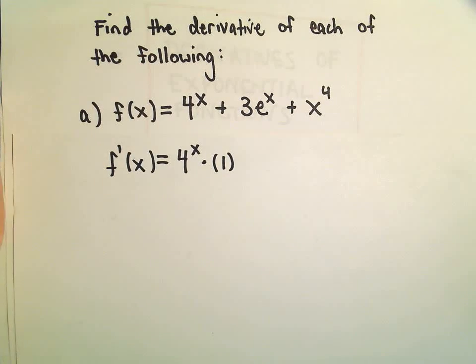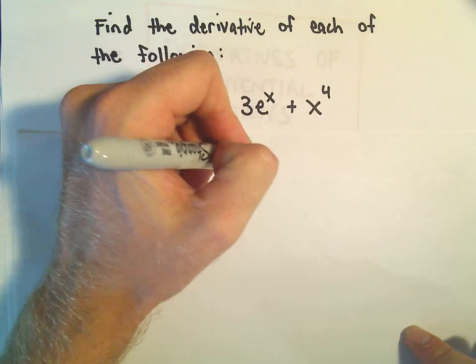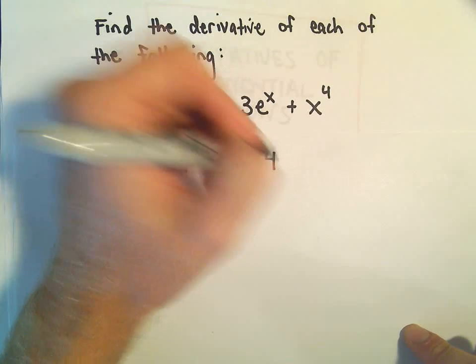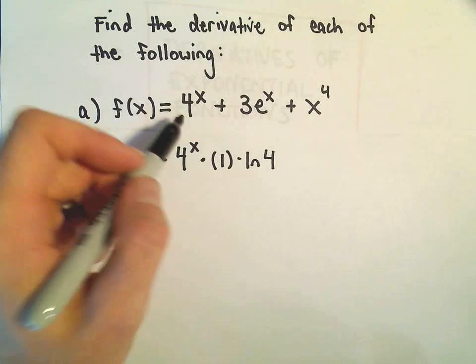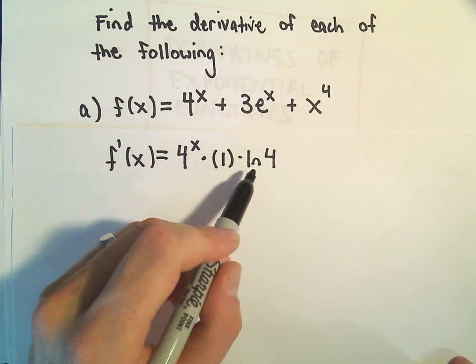But the derivative of the exponent is just 1. And then we have to multiply by the natural logarithm of the base, which in this case is 4. So that's the derivative of 4 to the x. We get 4 to the x times ln of 4.